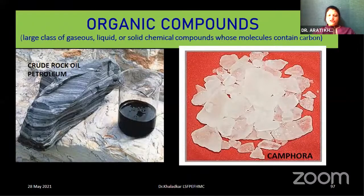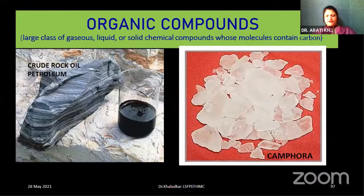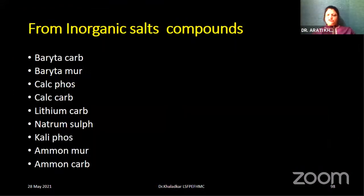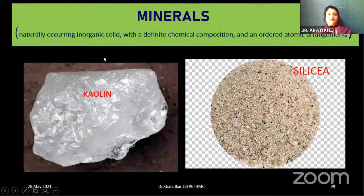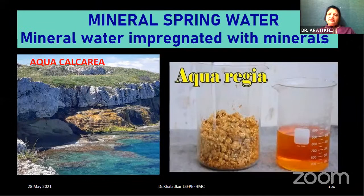Minerals here are naturally occurring inorganic solids with a definite chemical composition and an ordered atomic arrangement: Silicea and kaolin. We also have mineral spring water — water impregnated with natural minerals. Examples: Aqua calcarea and Aqua regia. Now we go on to the kingdoms of sarcodes and nosodes. Sarcodes are healthy secretions prepared from the basic protoplasm — vegetable protoplasm — and from hormones and enzymes obtained from the ductless glands, that is the endocrine glands. The secretions are mostly hormones and enzymatic secretions. Either the whole gland, organs, tissues, or extractions of animals as well as the human body are used.